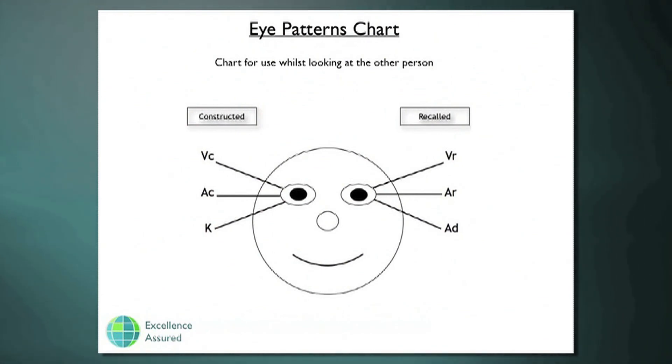As we go on now and begin to look at the eye pattern chart, this is extremely useful for knowing what's going on inside a person's head. So, for example, if a person looks up to visual recall when you're talking to them, you can say, oh, do you see what I mean?